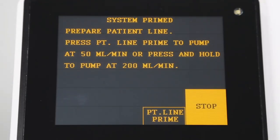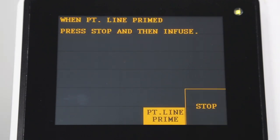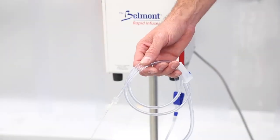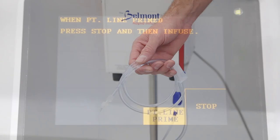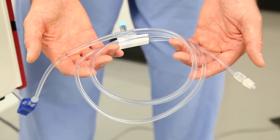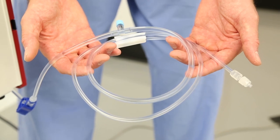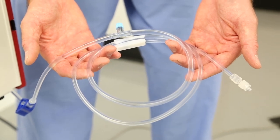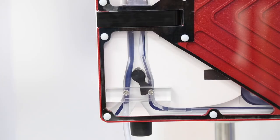The next screen will prompt you to prime the patient line. Press the patient line prime key once to prime at 50 milliliters per minute or press and hold the prime key to prime at 200 milliliters per minute. Press stop after you have confirmed all air has been purged from the patient line. The system automatically enters a standby mode until you are ready to connect to the patient's catheter. Before continuing, please inspect and make certain that the patient line is completely primed and free of air. Any air bubbles after the patient safety valve wand must be removed prior to patient connection.